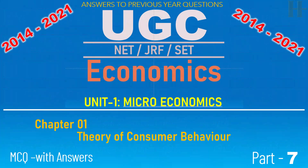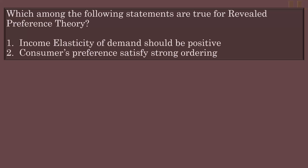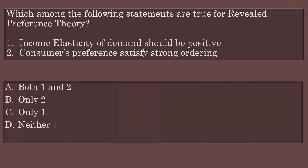Multiple choice question: Which of these statements are true for revealed preference theory? Statement 1: Income elasticity of demand should be positive. Statement 2: Consumers' preferences satisfy strong ordering. Options: Both 1 and 2, Only 2, Only 1.